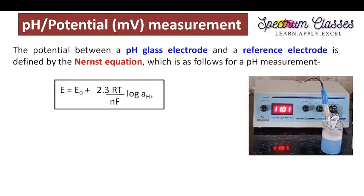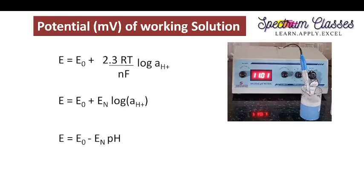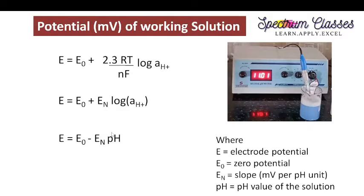The potential between the pH glass electrode and a reference electrode is defined by the Nernst equation. The Nernst equation for this glass electrode is: E is equal to E0 minus EN times pH. I have already derived this equation in my previous video.